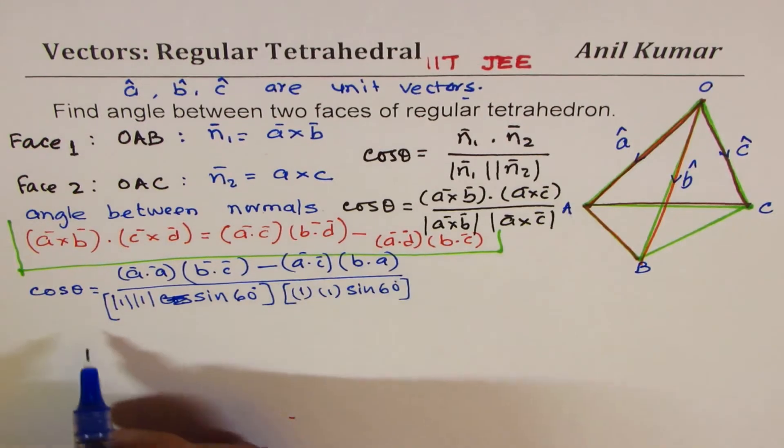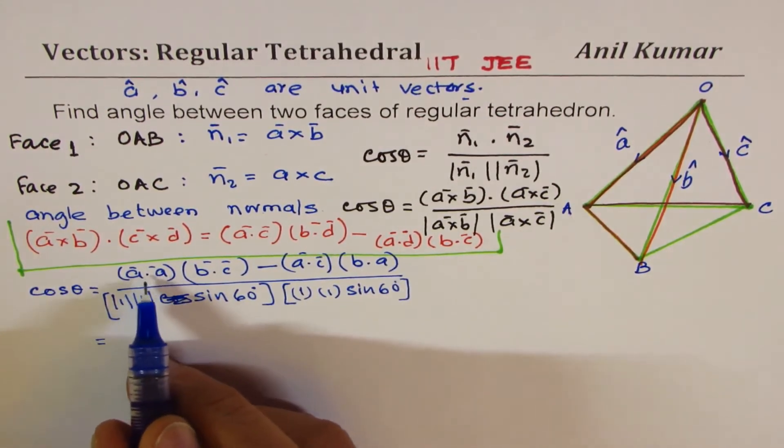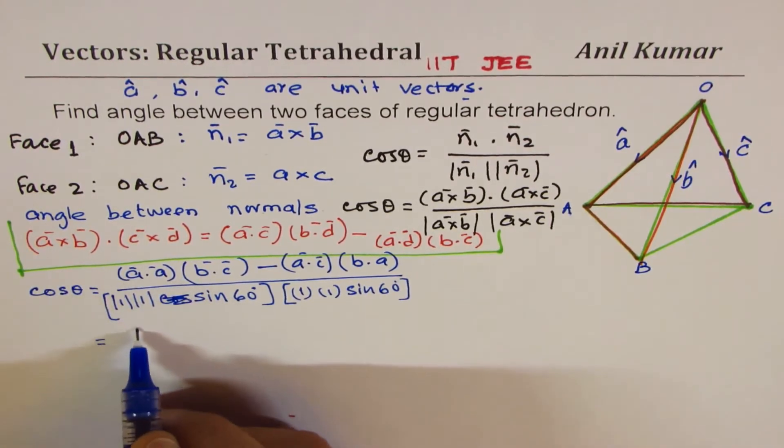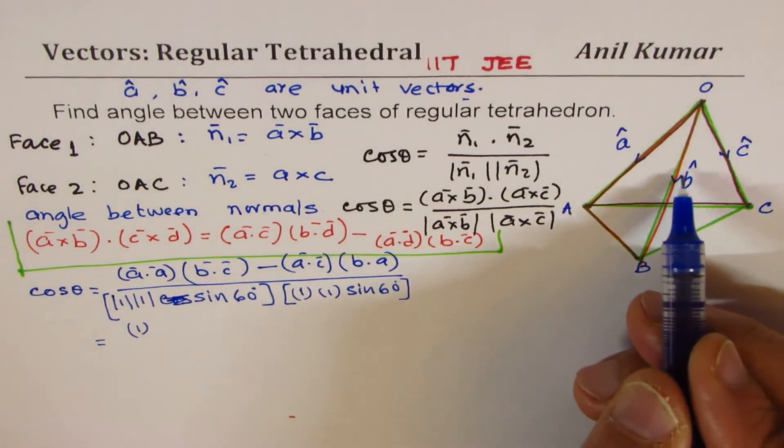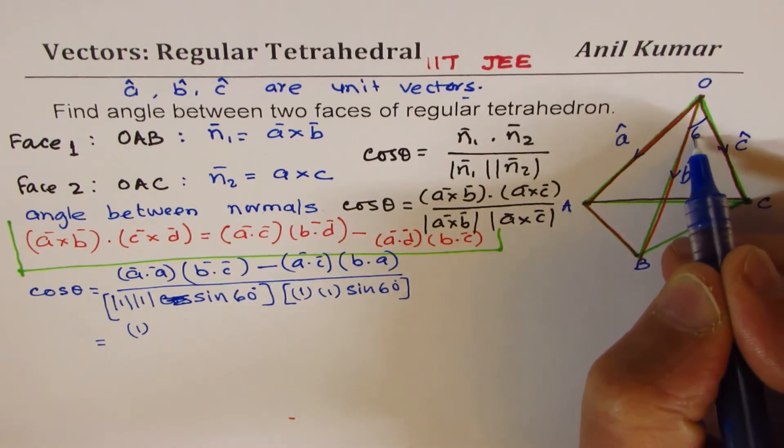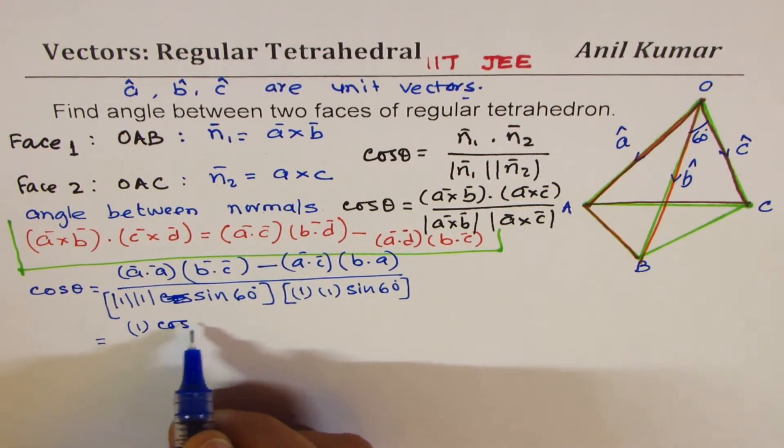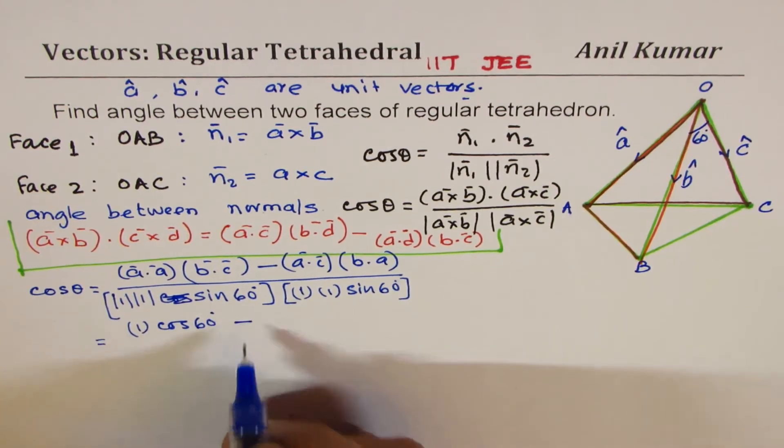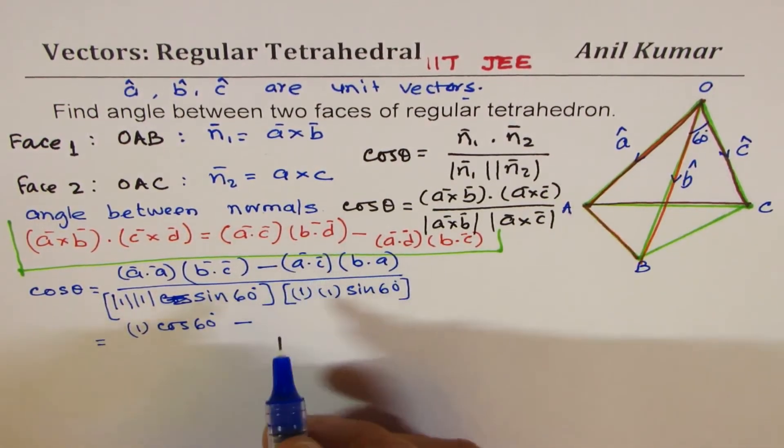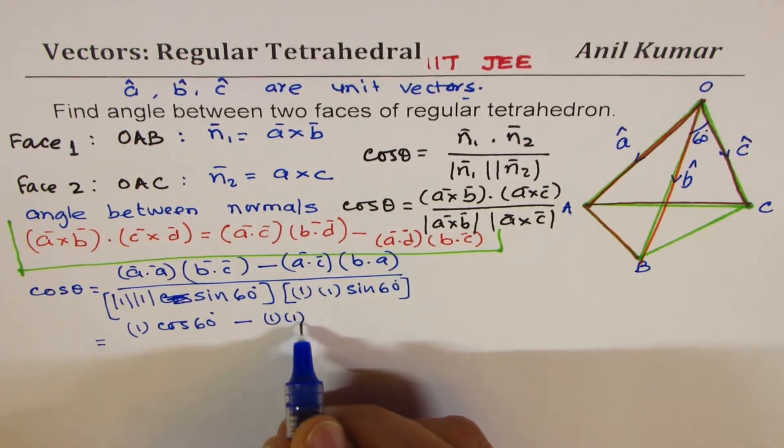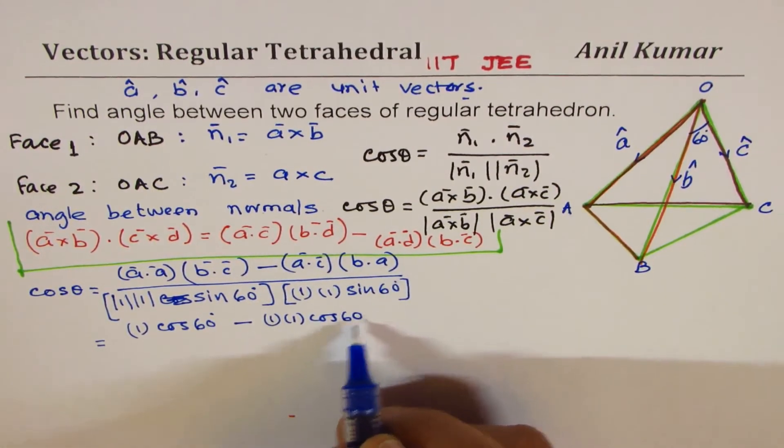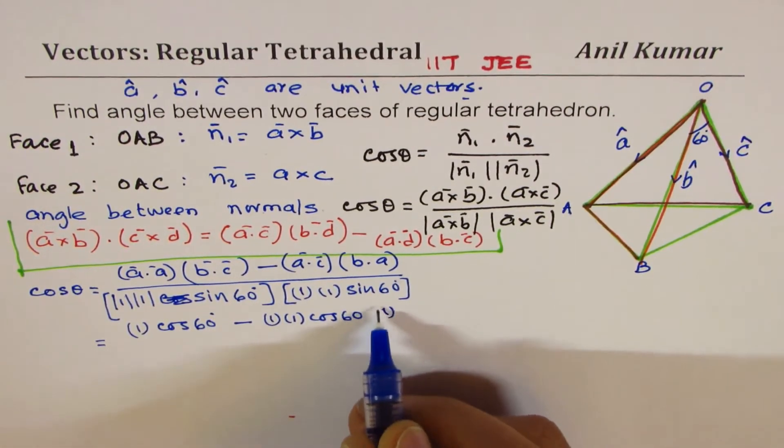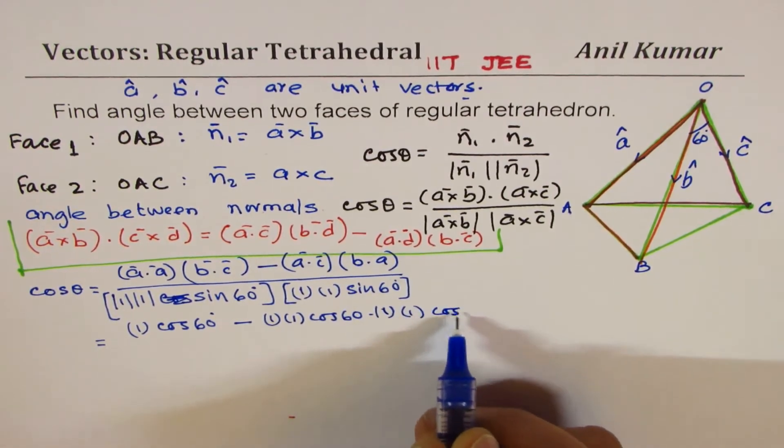So now in the numerator, A·A is 1. B·C is 1 times 1 times cos 60 degrees. In a tetrahedron, all these angles are 60 degrees. So it is cos 60° minus (A·C)(B·A), which is cos 60° times cos 60°.